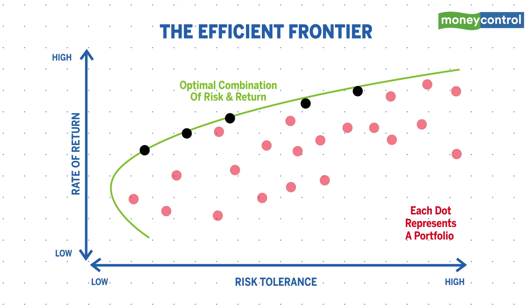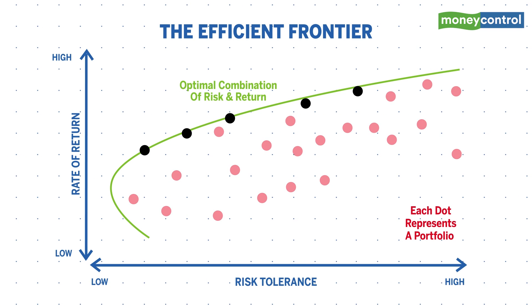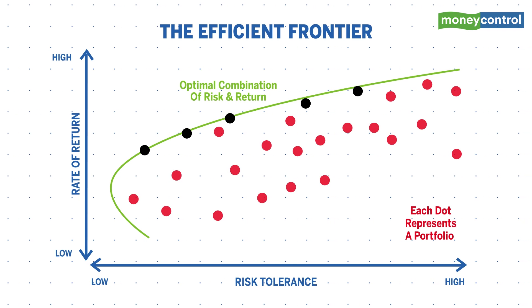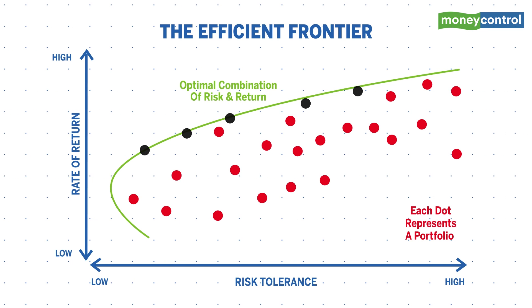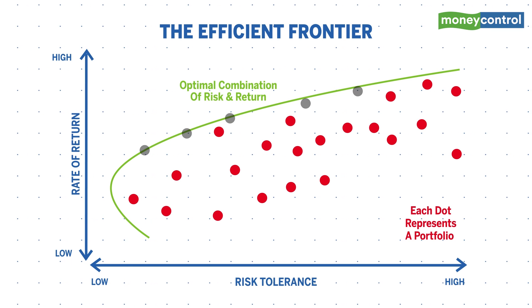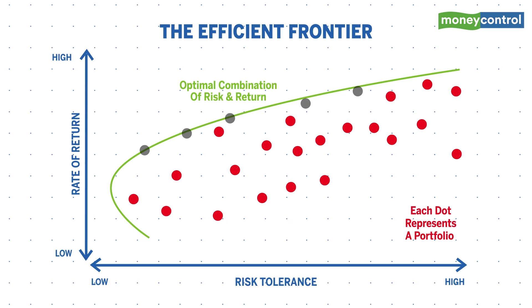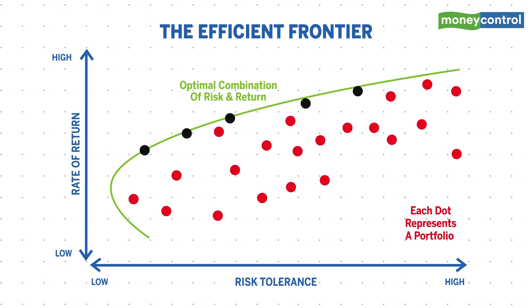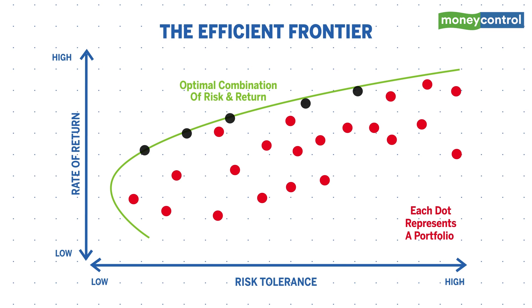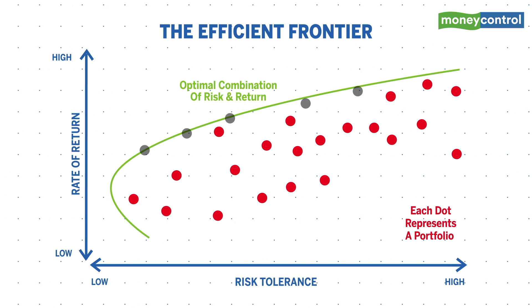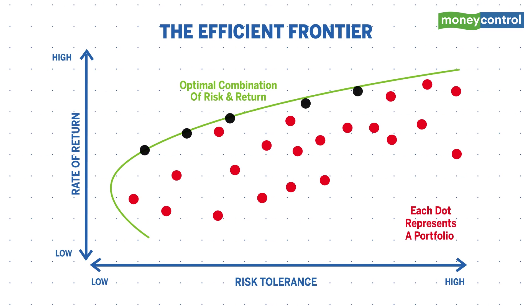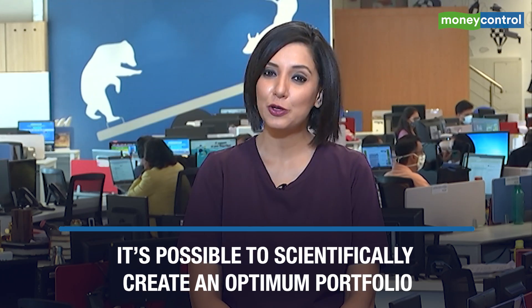However, portfolios falling on the upper or left side of the efficient frontier may be desired ones, because these come with lower risk and high return. So you can see it is possible to scientifically create and optimize a portfolio.